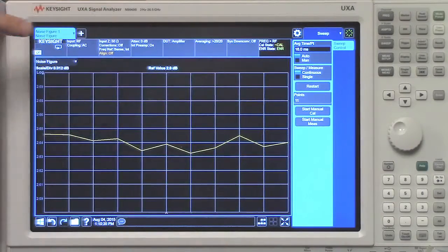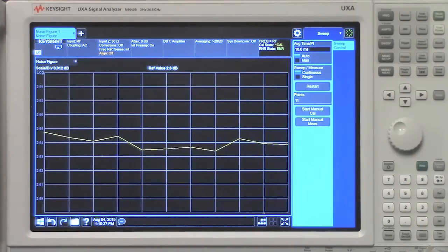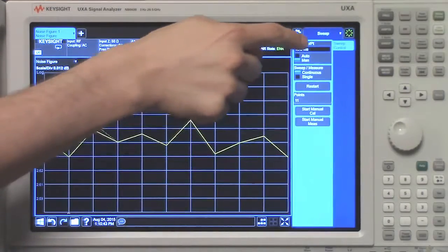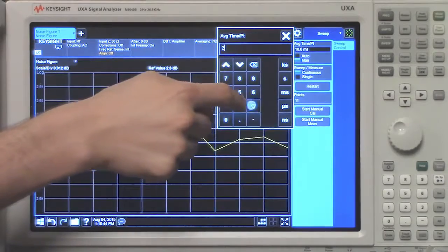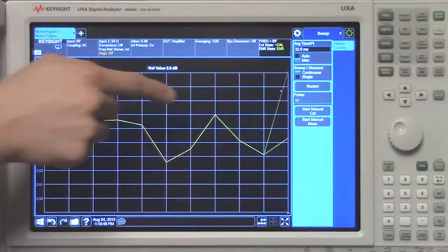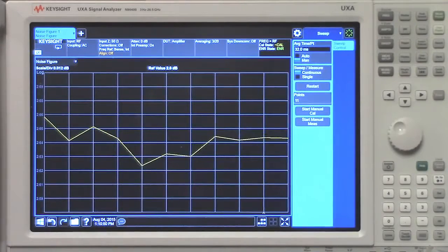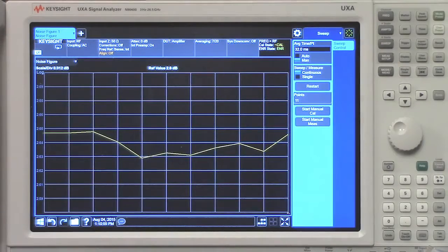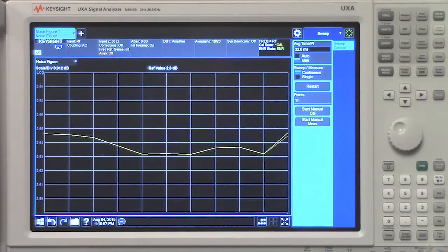That means that it's coupled to the current bandwidth setting. But you can switch it to manual and then set it to anything you want. Let's set it to 32 milliseconds. Each point is taking a little longer to update, but the trace is fluctuating a lot less than it was before.